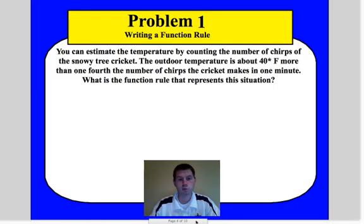Okay, problem one says you can estimate the temperature by counting the number of chirps of the snowy tree cricket. The outdoor temperature is about 40 degrees Fahrenheit more than one-fourth the number of chirps the cricket makes in one minute. So what is the function rule that represents this situation?